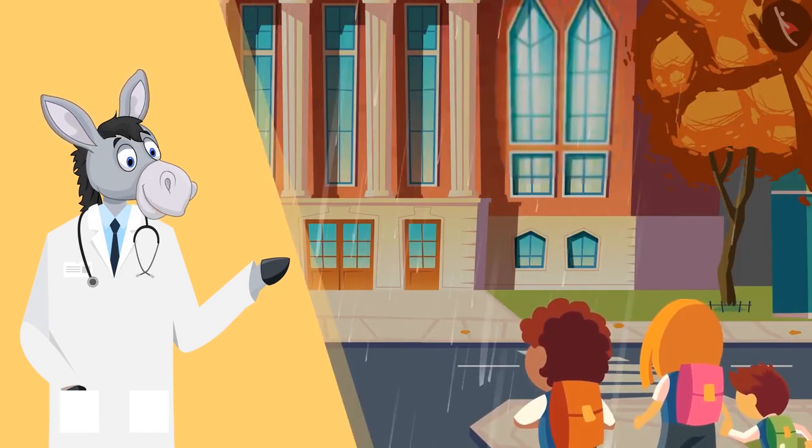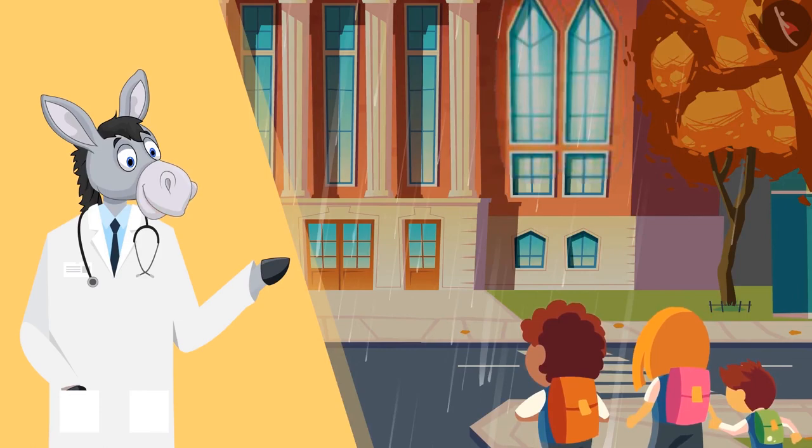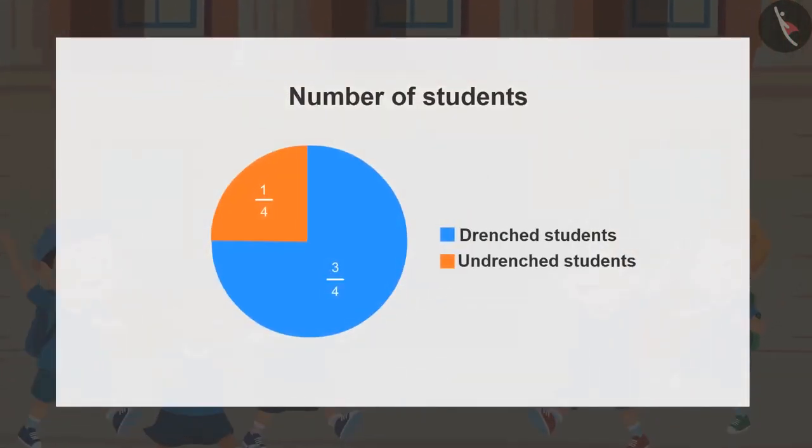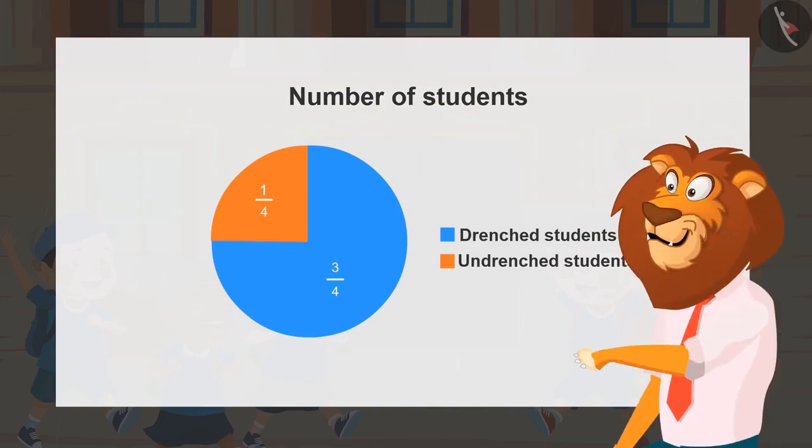Today, while coming to school, students got drenched in rain. Now, can you tell, has more than half of the students got drenched by the rain? Yes, more than half of the students got drenched in the rain, as three-fourth students got drenched.